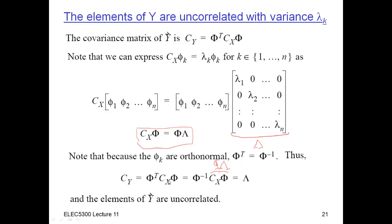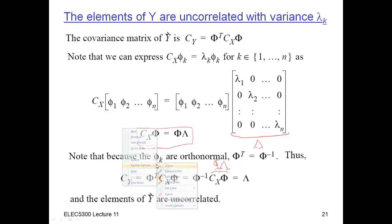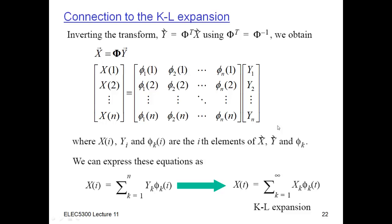So we've proven that the covariance matrix of Y is diagonal, meaning the elements of Y are uncorrelated. Their variances are given by the diagonal elements of this matrix, which are exactly the eigenvalues λ. Now I'd like to show the connection between this and the Karhunen-Loève transformation.